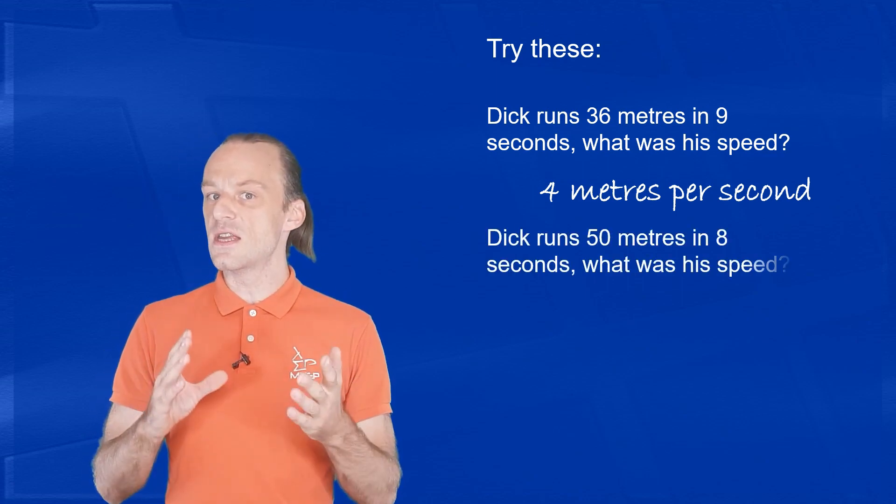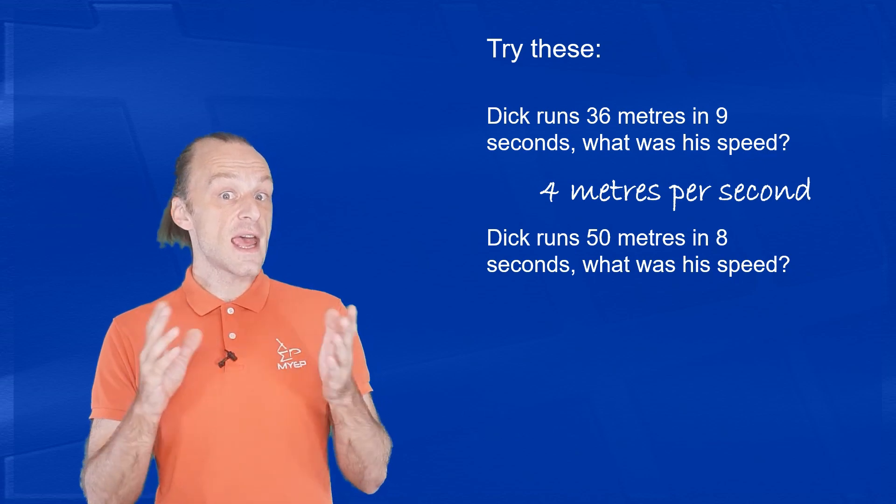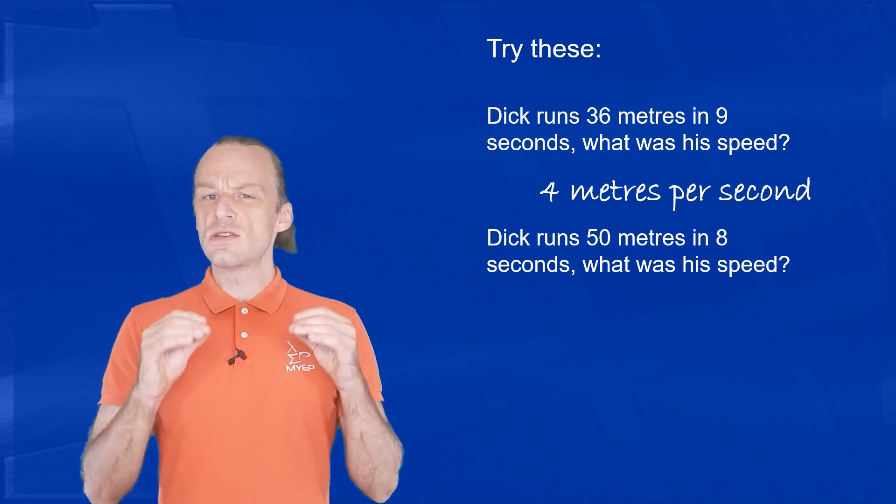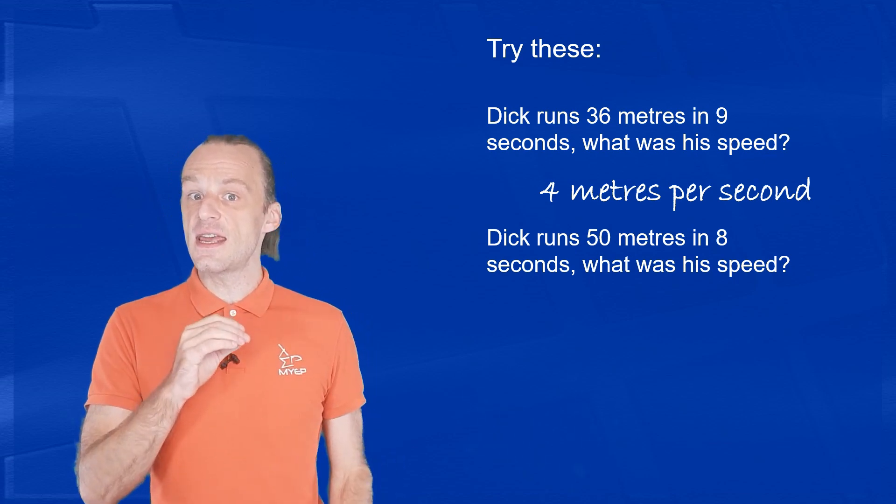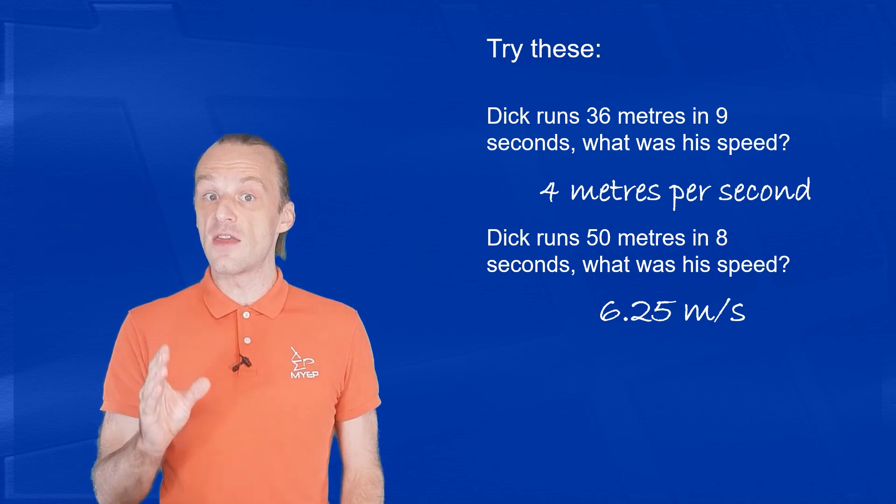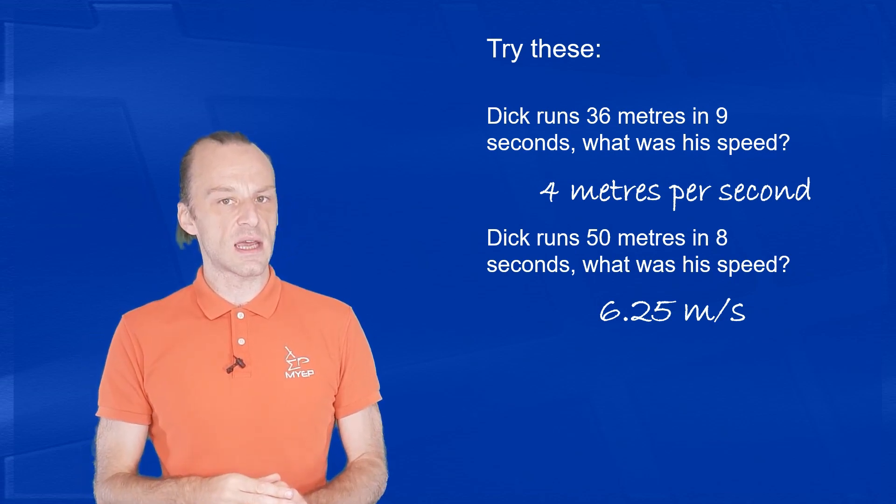What about if Dick runs 50 meters in eight seconds? What is his speed this time? 50 does not divide evenly into eight. So the answer we get here is 6.25 or six and a quarter meters per second.